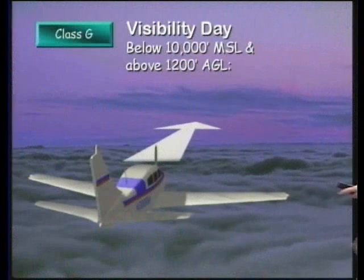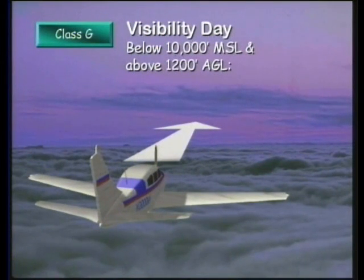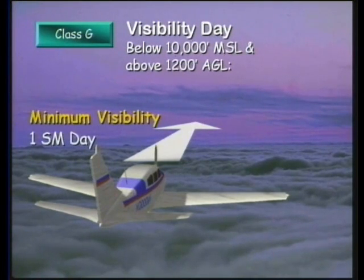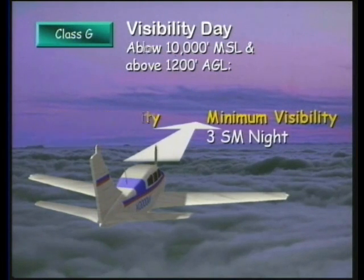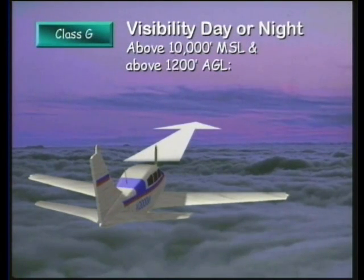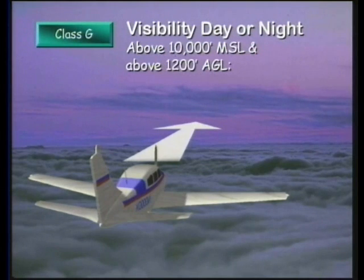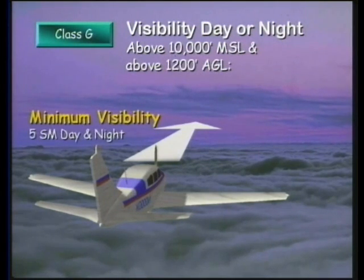Let's take a look at the next slide — we're going to look at visibility requirements for class G airspace. The visibility requirements for VFR flight in class G airspace are one mile during the day when operating below 10,000 feet MSL. This visibility goes up to three statute miles at night. When operating above 10,000 feet MSL and above 1,200 feet AGL, you'll need to have at least five statute miles visibility, day or night.